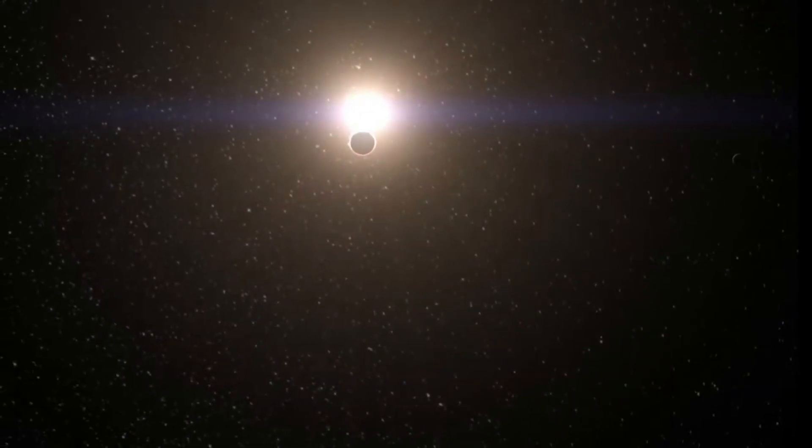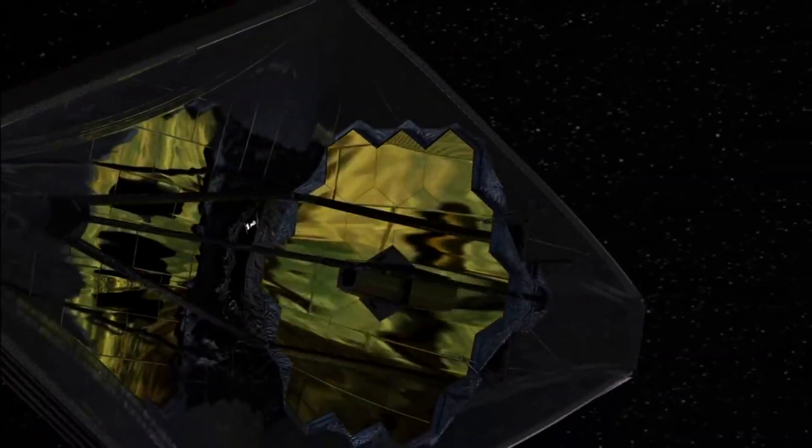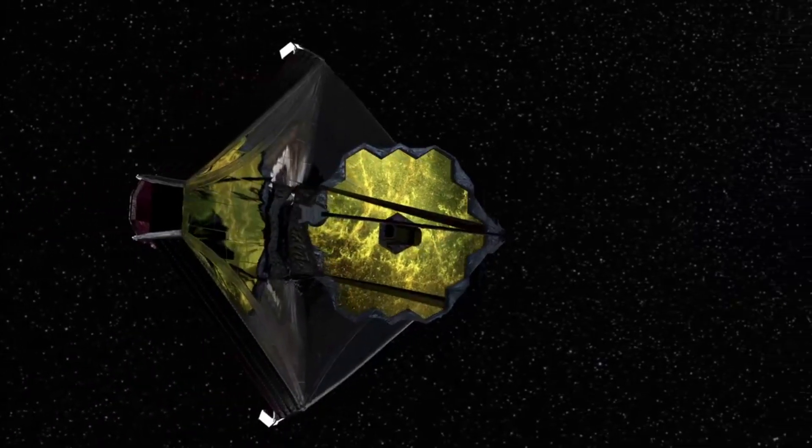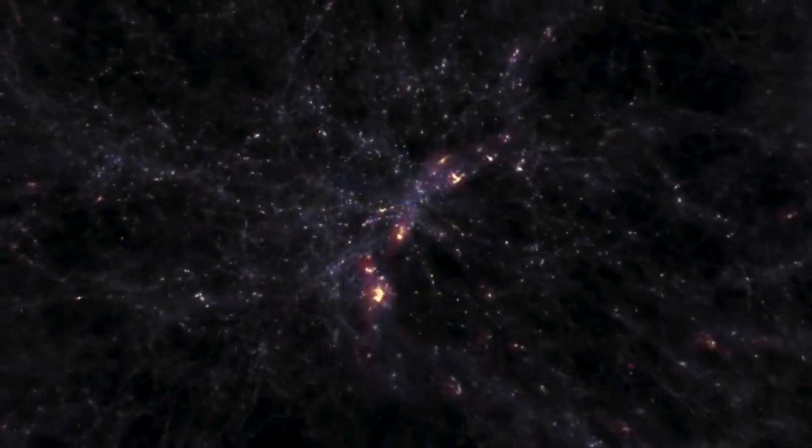The James Webb Space Telescope has been very busy since the day it launched. Throughout this process, NASA has been providing in-depth updates allowing us to keep track of Webb's progress. This includes its alignment process, initial images, and crucial checks of different pieces of equipment, among other things.